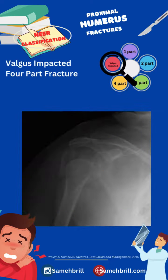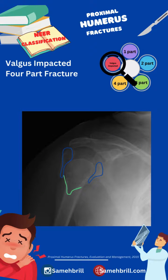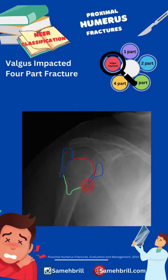In the valgus impacted four-part pattern, the head lies superiorly, while a soft-tissue hinge remains attached to the head fragment.